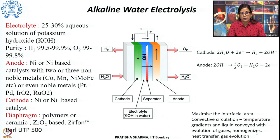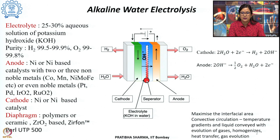The anode is typically nickel or nickel-based material with electrocatalysts, which could be non-noble metals like cobalt, manganese, nickel, molybdenum, or iron, or noble metals like platinum, palladium, iridium oxide, or ruthenium oxide. The cathode side uses nickel or nickel-based catalyst. The separator or diaphragm is generally Zirfon — ZrO2-based, Zirfon Pearl UTP 500 — and can also be polymer or ceramic based.